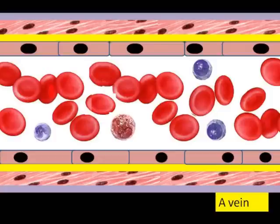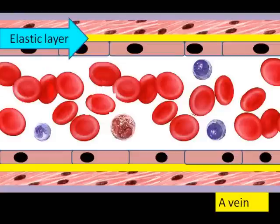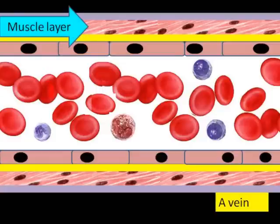Here we've got a vein. A vein has a relatively wide lumen. It's still surrounded by the endothelium, but there's also a layer of elastic tissue and a layer of muscular tissue. And then there's the tough outer layer on the outside.